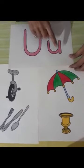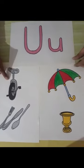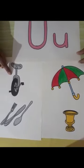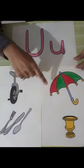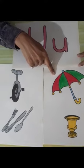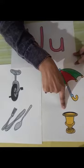U says a. U says a. A-a unicycle. A-a utensils. A-a umbrella. A-a urn.